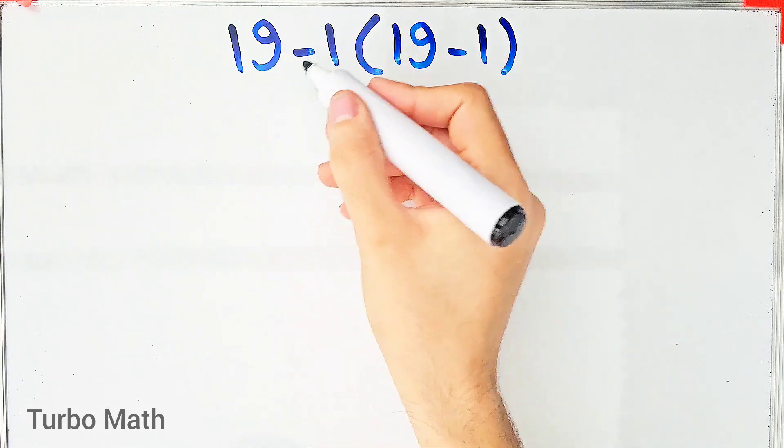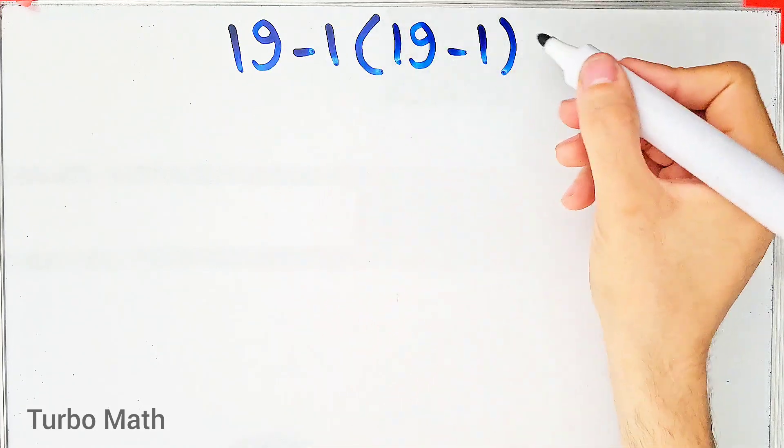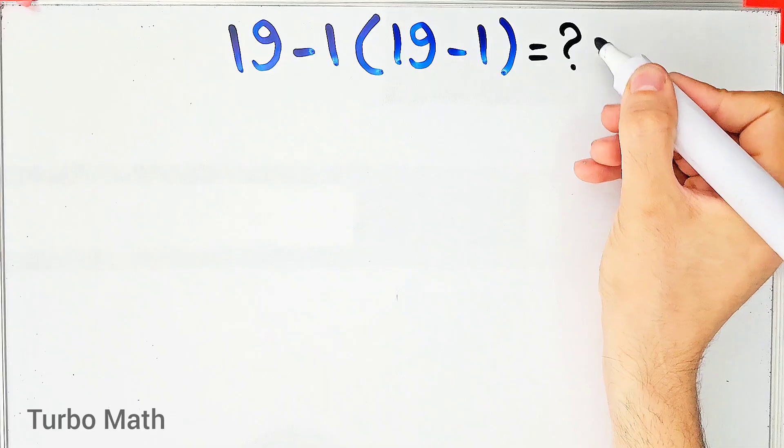19 minus 1, then times 19 minus 1. What is the answer of this question? Can you solve it?